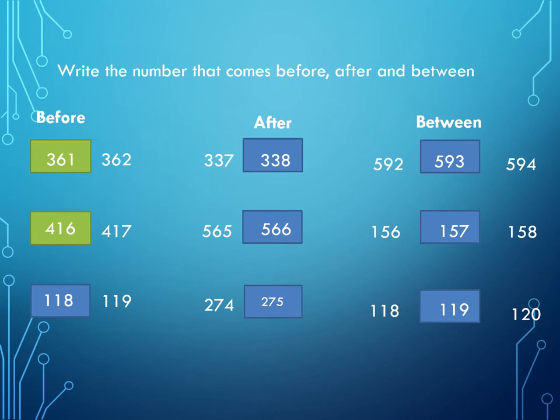Now we will solve after numbers. First we have 337. 3 is in hundreds, and it will not change. Look at 37, what comes after 37? Yes, 38. We will write 338.